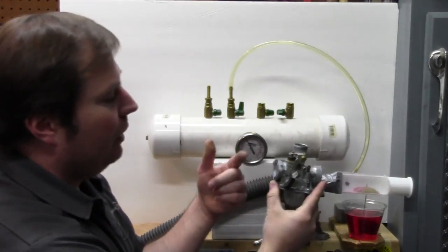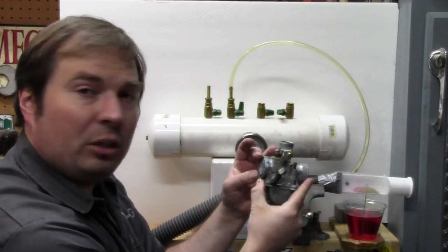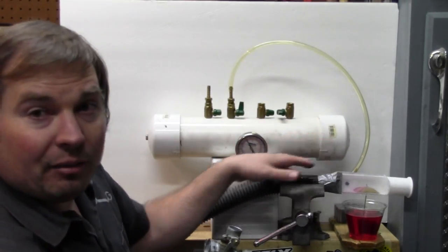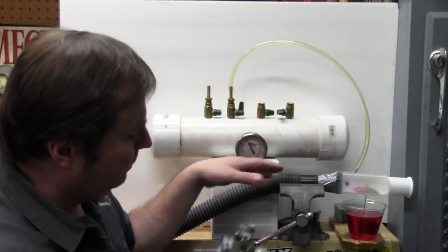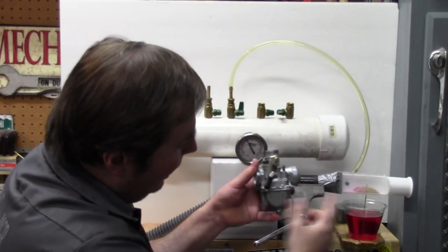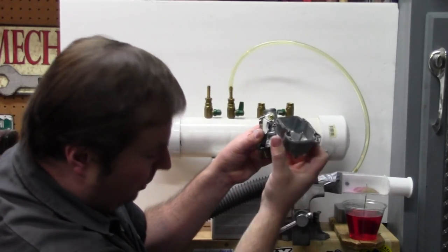This end of the carburetor would be bolted to the intake that goes to the engine. That's represented by the vacuum cleaner hose here. This cup with the red dye in it represents the carburetor bowl right here.